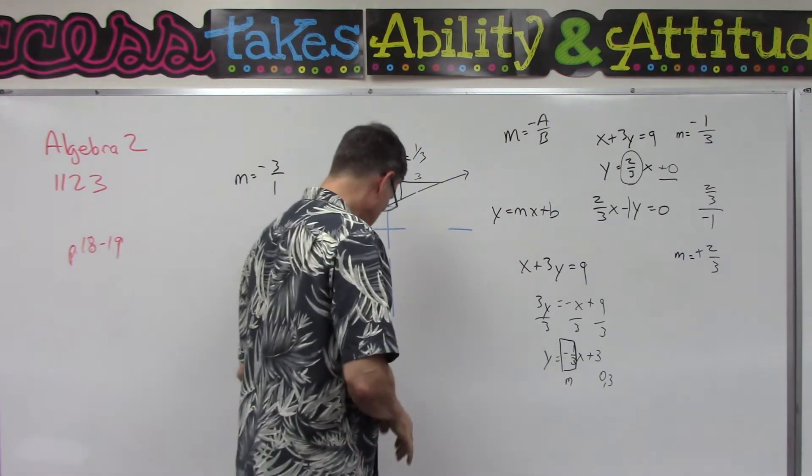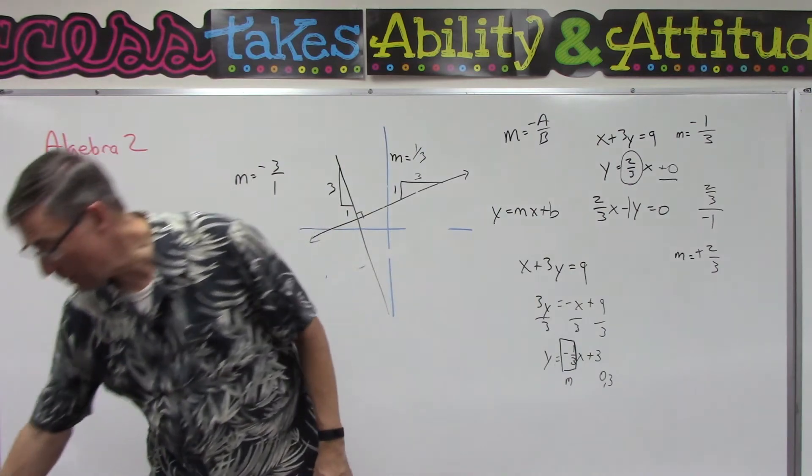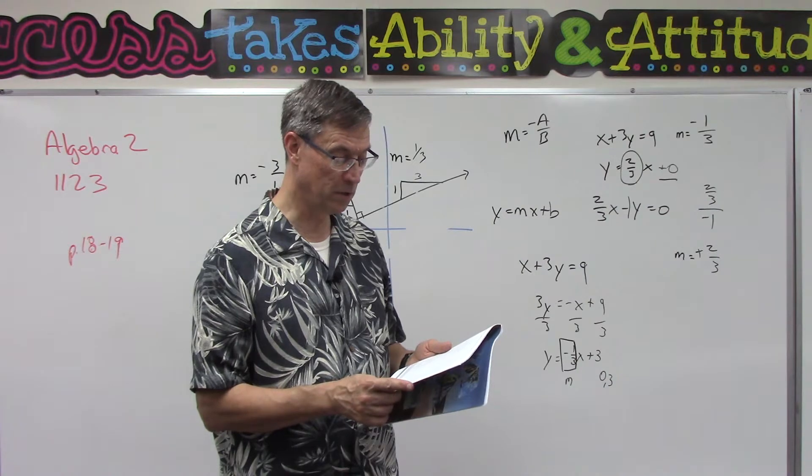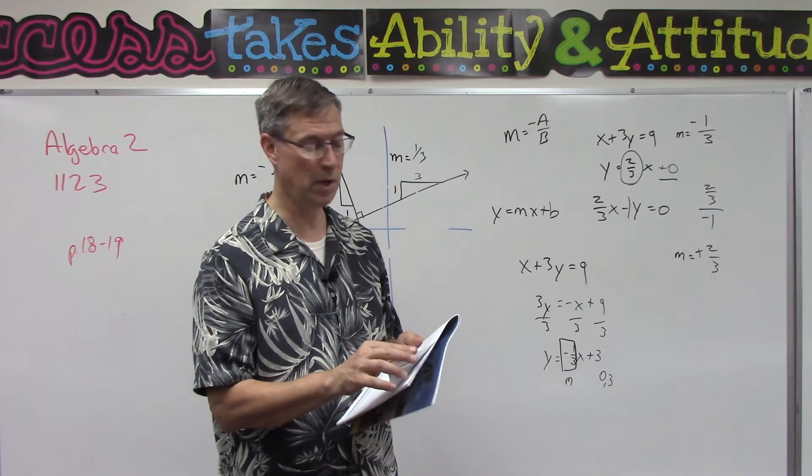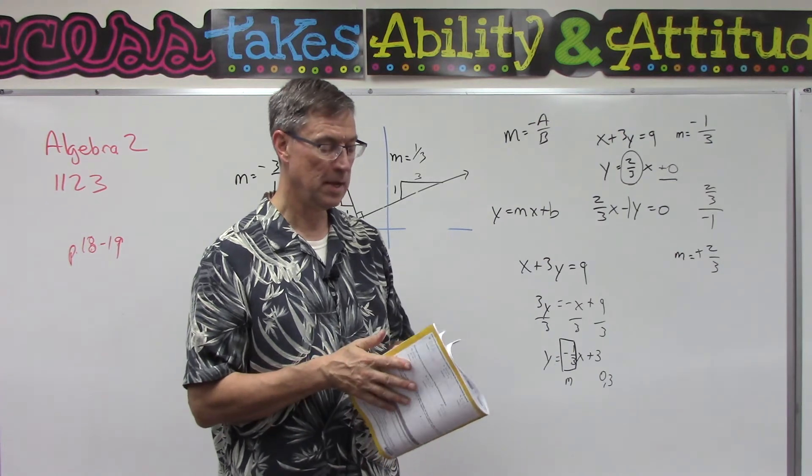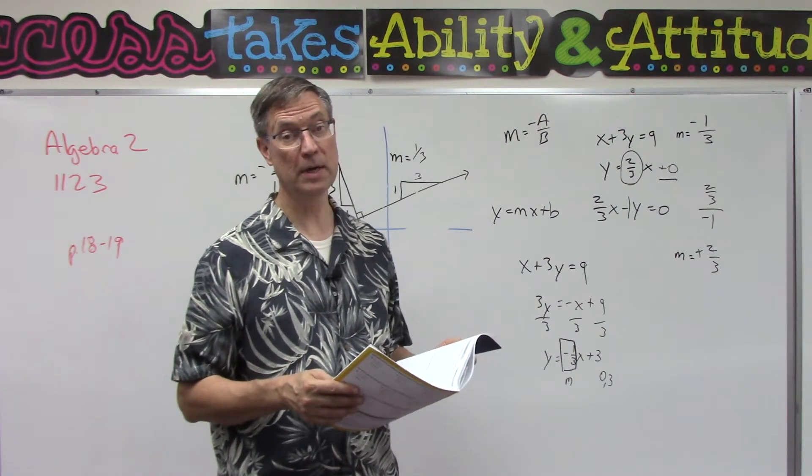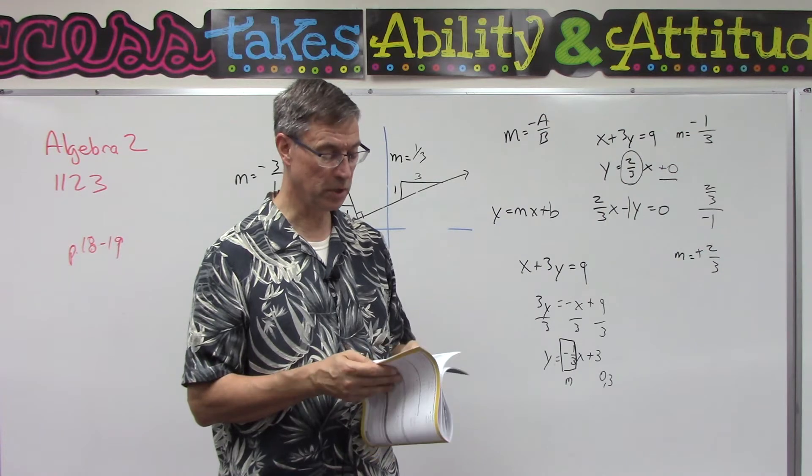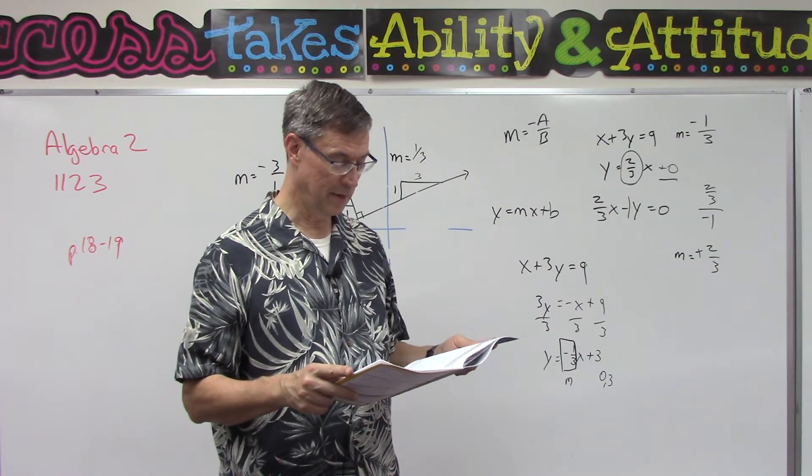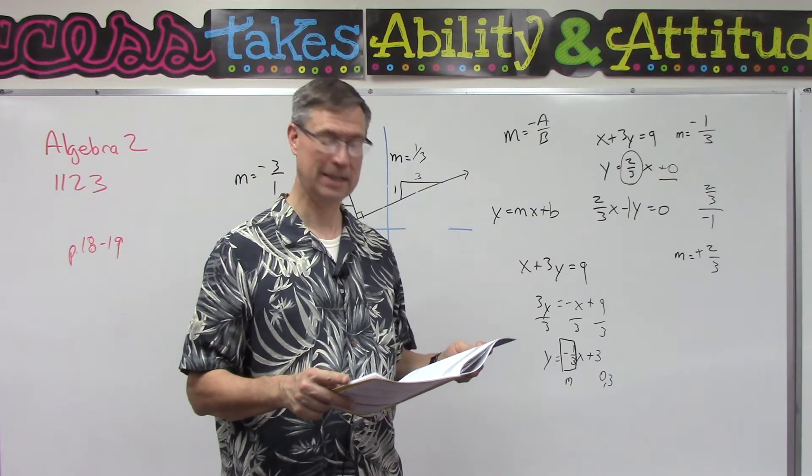All right, so this is kind of a wrap it up for this section right before the checkup. There's four of these, so I want you to find the slope for both of them, graph both lines on the coordinates, and then check everything and you're ready to do the checkup on pages 20 and 21.